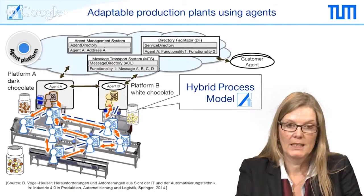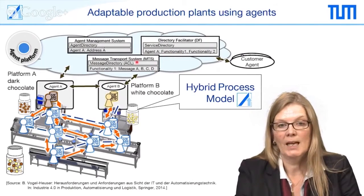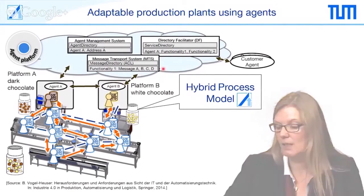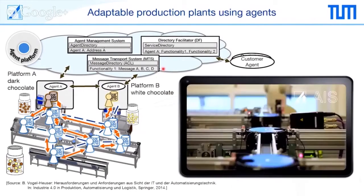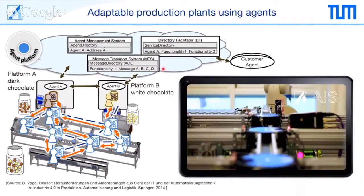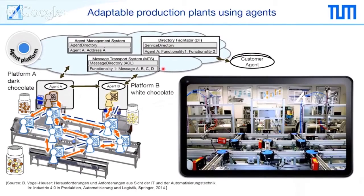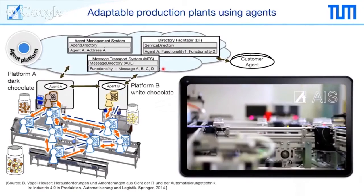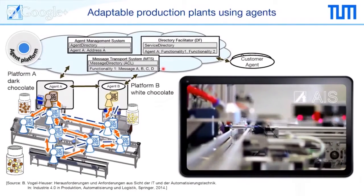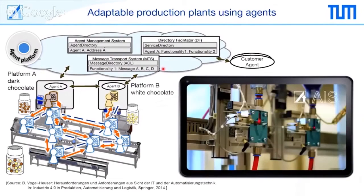An agent has abilities, services, and functionalities and knows exactly how it can communicate with the others. Let's have a look at the plant again — we see how the bottles are passed through the plant, passing the switches, going to the filling stations on the left and right. Looking closer at the left one, instead of dark and white chocolate, we now use red and blue balls. Unfortunately, we don't use yogurt but water, and in this case we just use the balls.